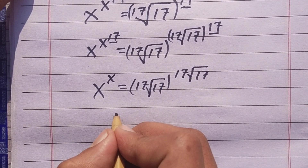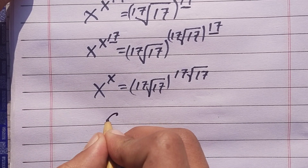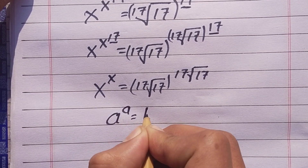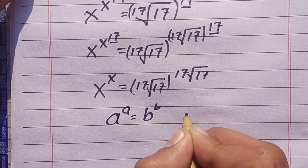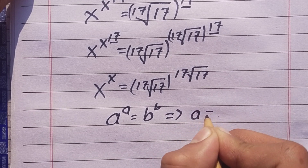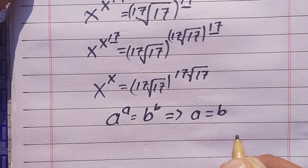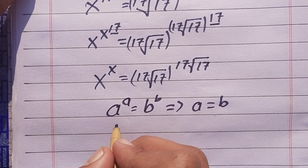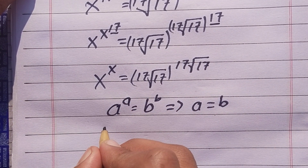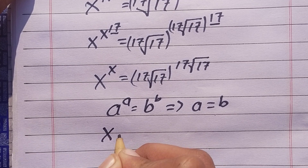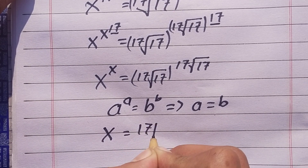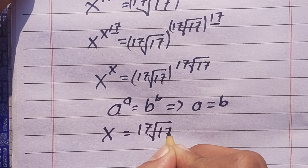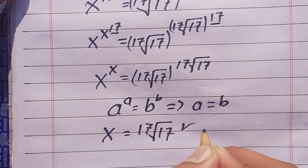We have the property that a power a is equal to b power b implies that a is equal to b. Applying this property here, we get x is equal to the 17th root of 17.